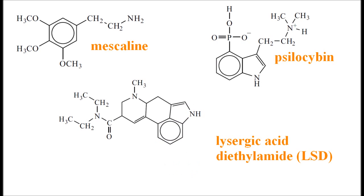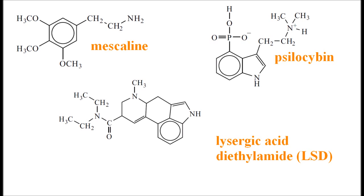The second thing it seems the IB want you to know is that there are amines everywhere. An amine is a nitrogen with at least one carbon attached to it — that's not a perfect definition, but it's good enough for IB. There is an amine in mescaline there — a primary amine.